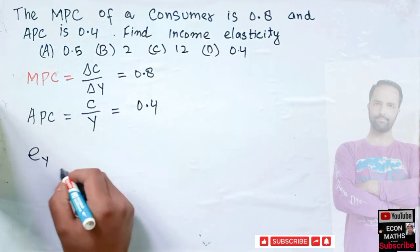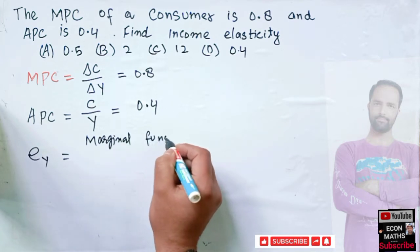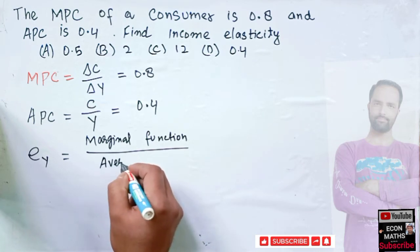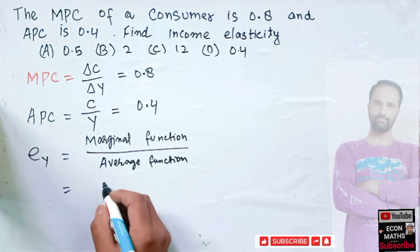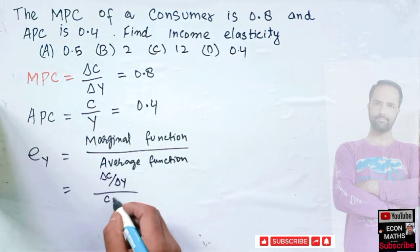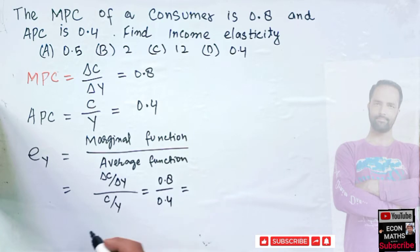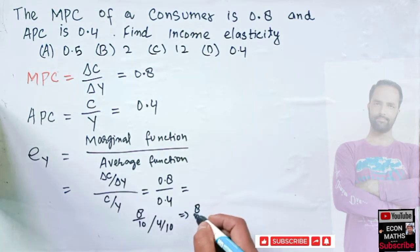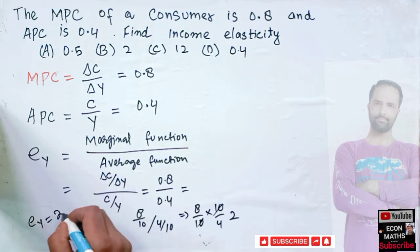Income elasticity can be calculated in two ways. The first is simple: any elasticity equals the marginal function divided by the average function. Our marginal function is del C upon del Y, which is 0.8, and our average function is C upon Y, which is 0.4. So we get 0.8 upon 0.4, which is 8/10 divided by 4/10, giving us 8 upon 4, which equals 2. So our income elasticity comes out to be 2.